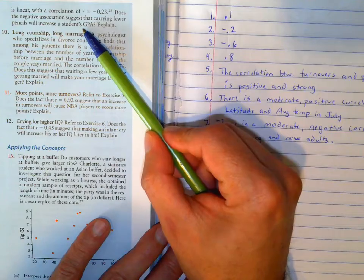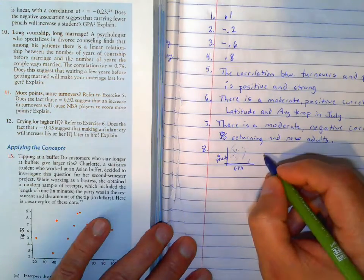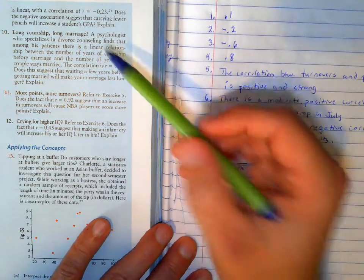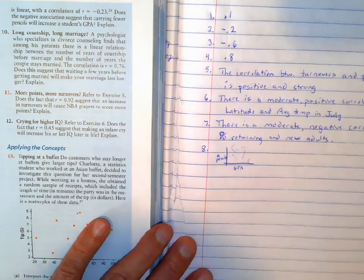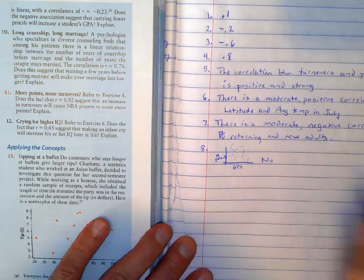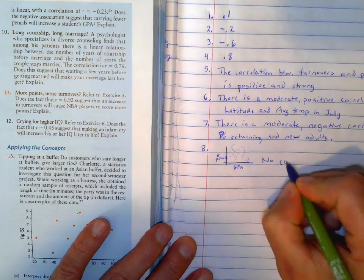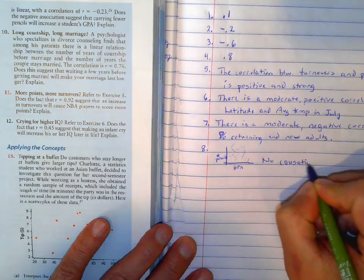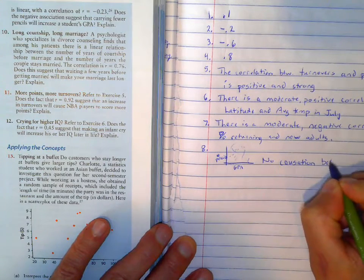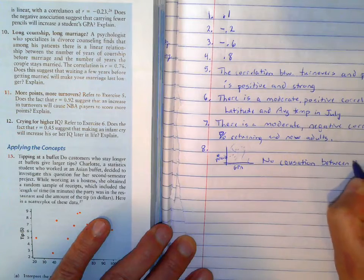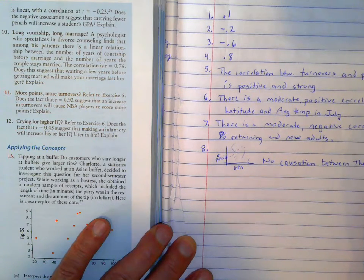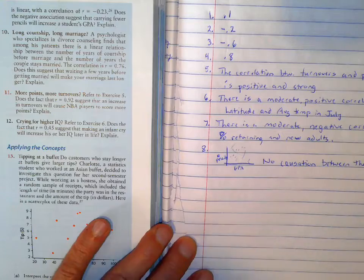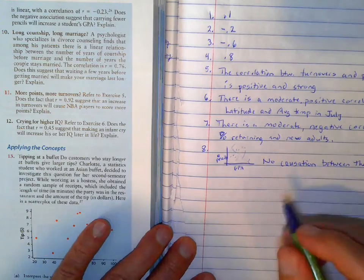So there might be, the negative 0.23 means it's pretty scattered, but it is a negative relationship. But does this mean that carrying fewer pencils will increase your GPA? So is there a cause and effect relationship there? If I start carrying more pencils, is my GPA going to change because of that? No. So there is no causation between the two areas. There's an association, even though it's weak, but it's not a very good one.